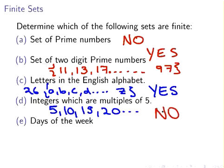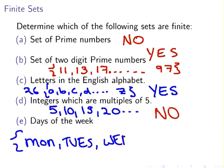Days of the week, an easy one to finish with. Yes, there are 7 days in the week. We can write them all out. The cardinality is 7. So Monday, Tuesday, Wednesday, and so on, all the way up to Sunday. And the cardinality of that one is 7.